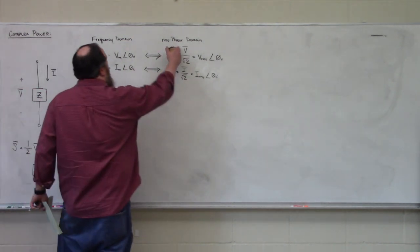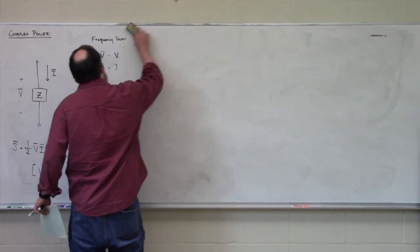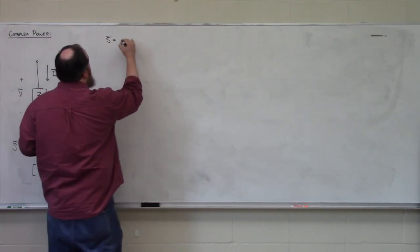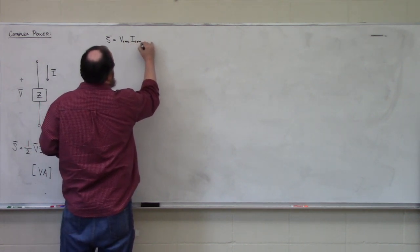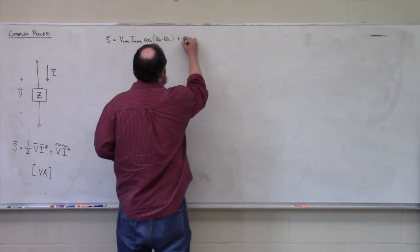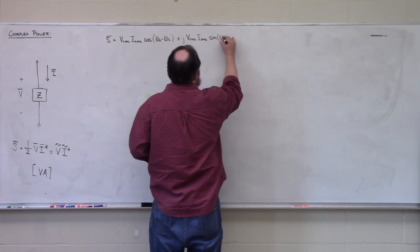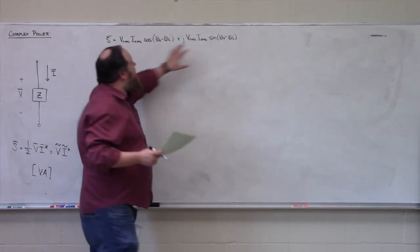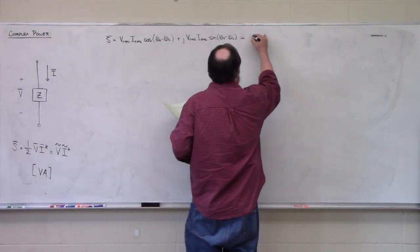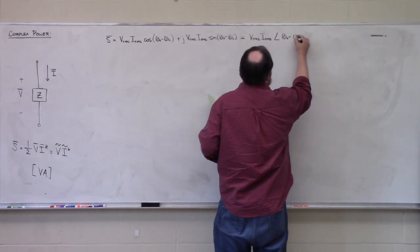Substituting the RMS phasor domain relationships into our equation for complex power, we can express complex power S as Vrms·Irms·cos(θV − θI) + j·Vrms·Irms·sin(θV − θI). This is the rectangular form. In polar form, this becomes Vrms·Irms at an angle of theta V minus theta I.